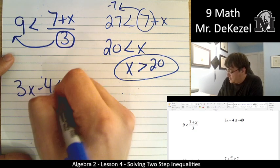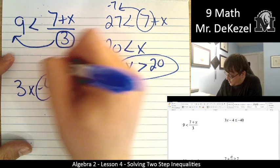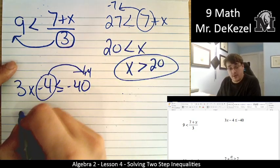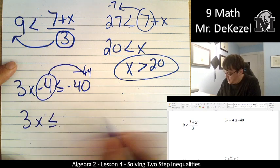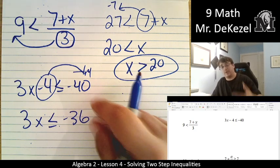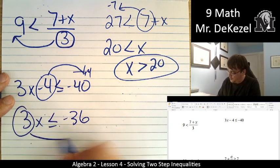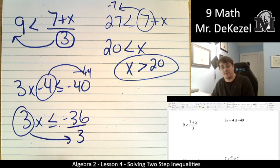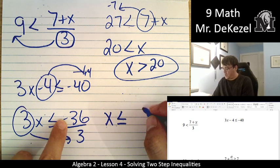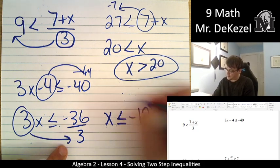3x minus 4 is less than or equal to minus 40. We're going to take the minus 4 and move it over. It's plus 4 on this side. So then 3x is less than or equal to minus 36. Minus 40 plus 4. We're going towards 0. We then move the 3 to the other side. It's on the top on here. It's going to be on the bottom. x is less than or equal to minus 36 divided by 3. That's minus 12.